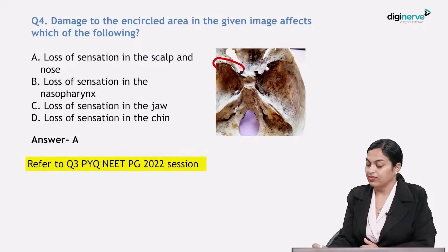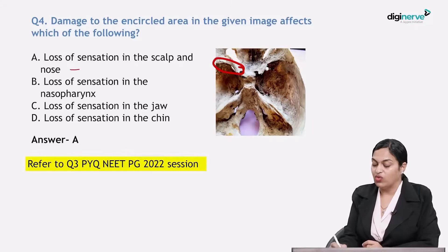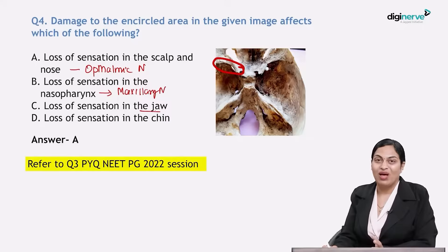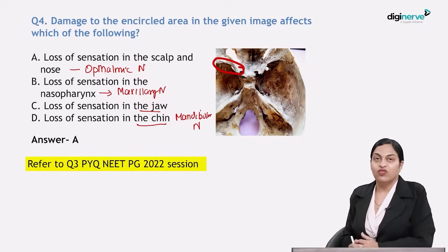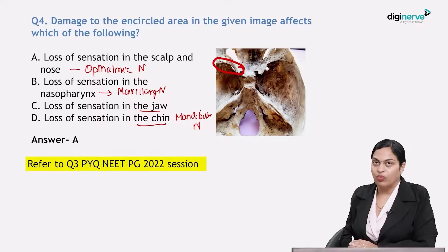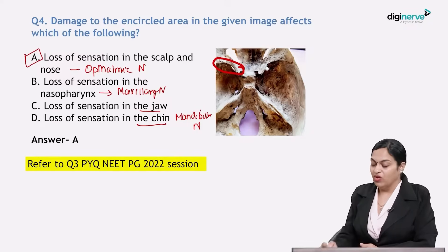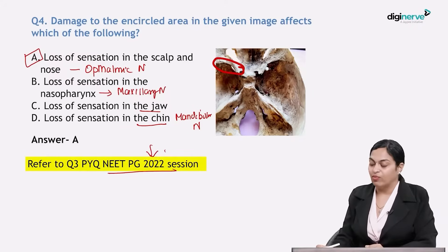Coming to the options: loss of sensation in the scalp and nose involves the ophthalmic division of the trigeminal nerve. Loss of sensation in the nasopharynx involves the maxillary nerve. Loss of sensation in the upper jaw is maxillary nerve; lower jaw is mandibular nerve — definitely not ophthalmic. Loss of sensation in the chin is mandibular nerve. Of the three divisions of the trigeminal nerve, the one passing through the superior orbital fissure is the ophthalmic division — lacrimal, frontal, and nasociliary. For further detail, refer to question number 3, NEAT PG 2022 session. Option A is the most apt.